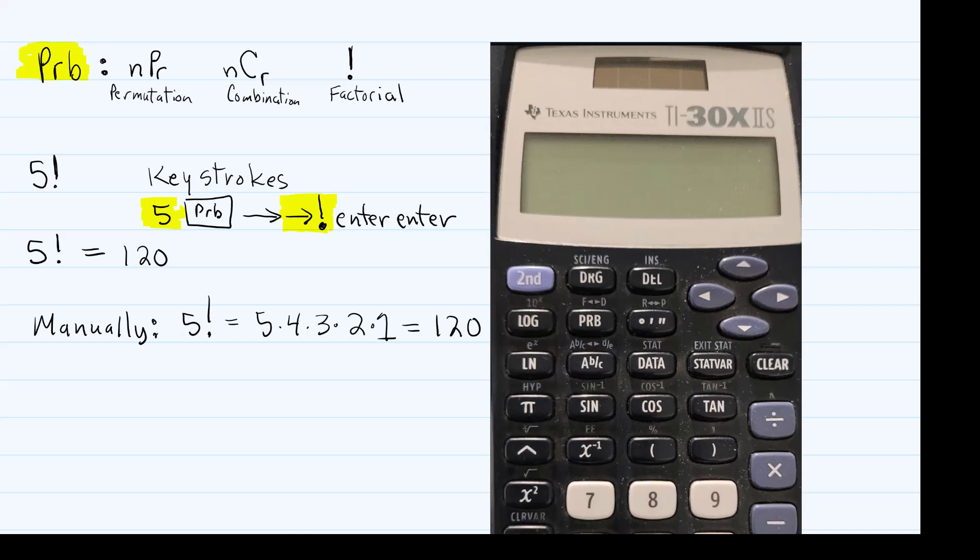The first thing I'm gonna address is a factorial. A factorial is an exclamation. So if you have, on a test, if you see evaluate five exclamation points, here are the keystrokes.